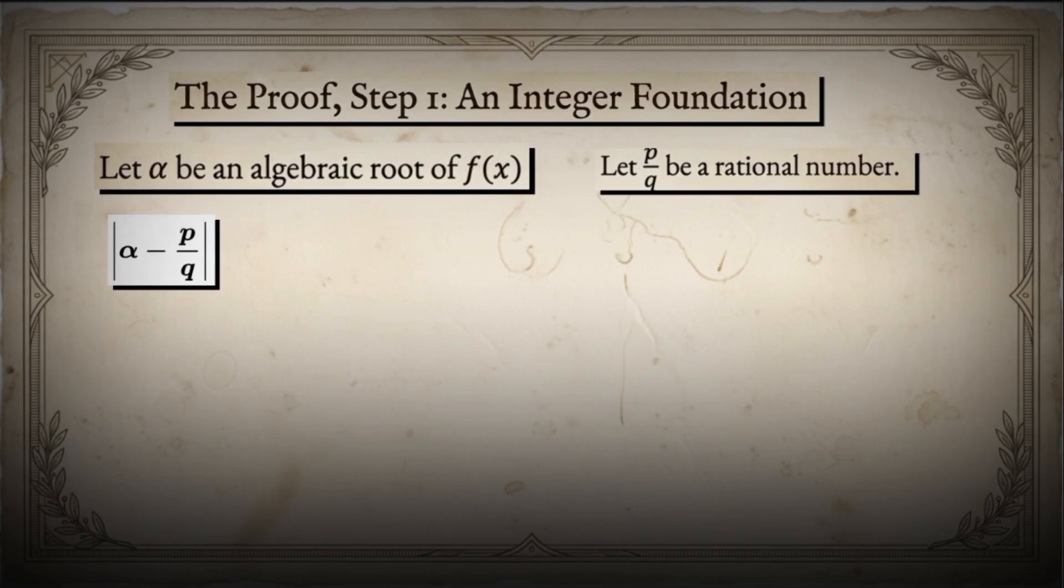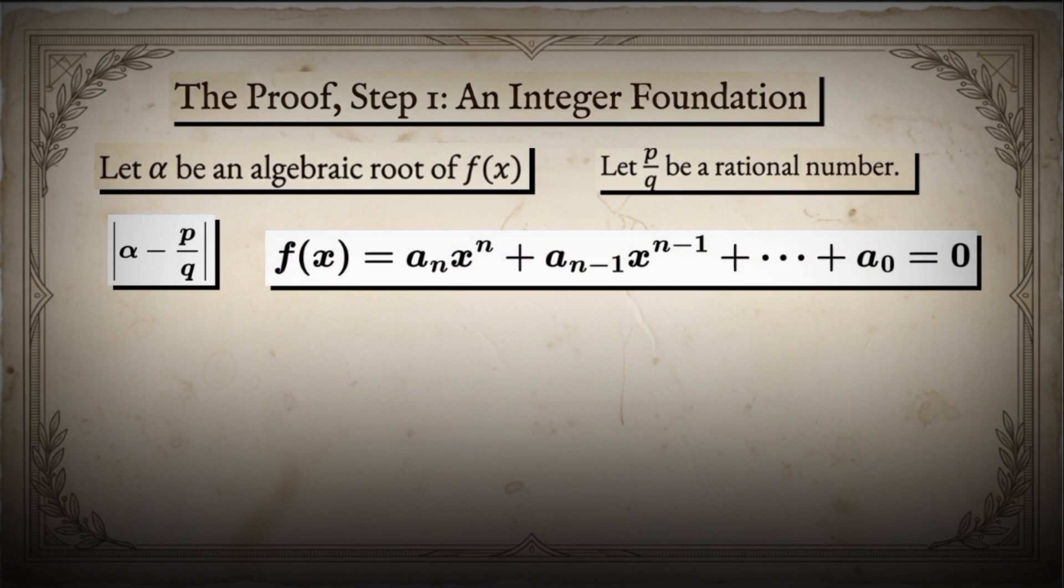Since alpha is algebraic of degree n, it satisfies a polynomial equation. This equation has the form a sub n times x to the power n plus a sub n minus 1 times x to the power n minus 1, continuing down to a sub 0, equals 0.